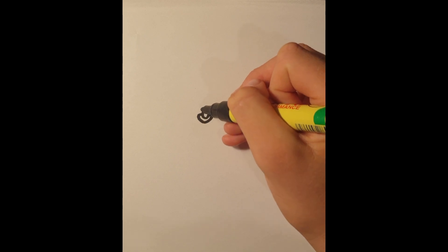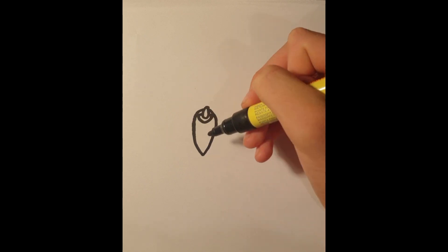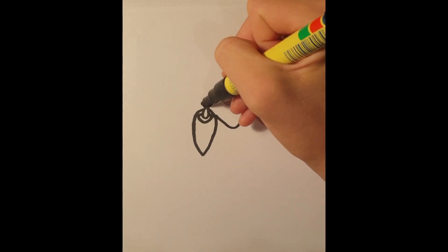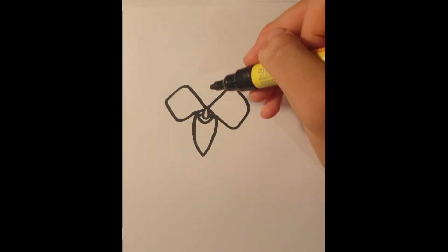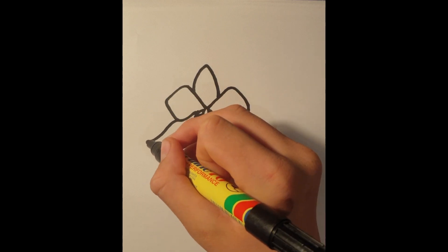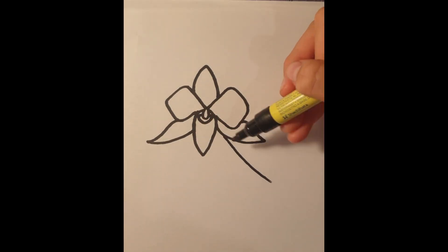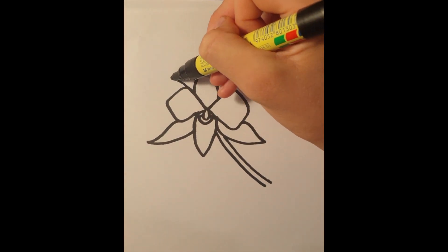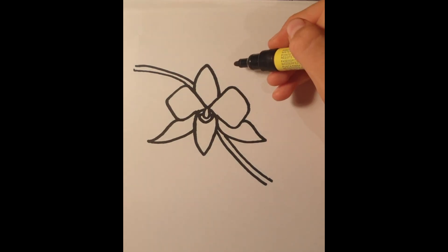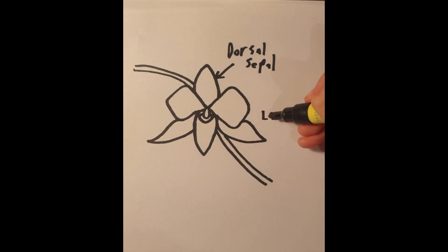Orchidaceae are perhaps better than any other family of flowering plants, as orchids represent the extreme specializations that are possible in nature. Orchids have a unique flower structure which consists of four main parts: one dorsal sepal at the top and two lateral sepals on each side, three petals, one on each side and the lower lip, also called the labellum.